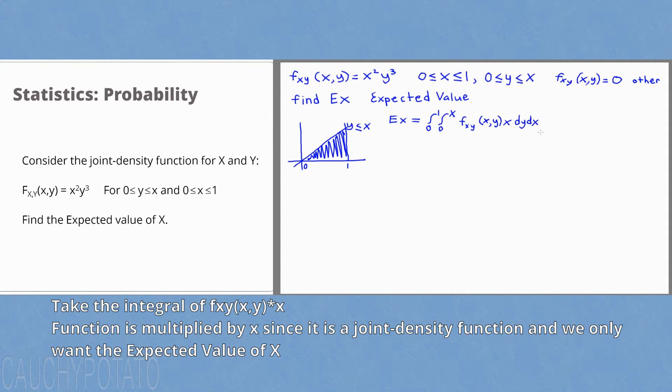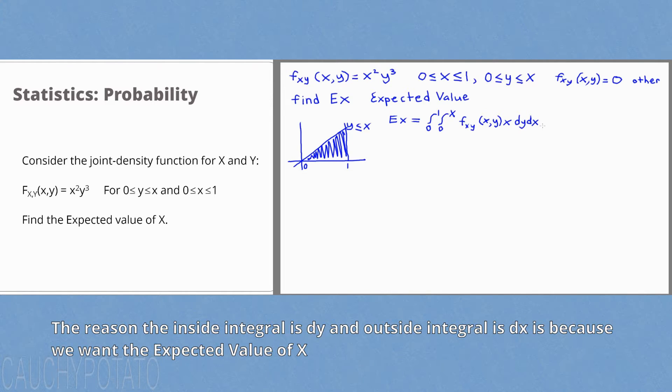The reason we multiply the function by x is because we are looking for the expected value of x. If we were looking for the expected value of y, we would multiply the function with y. Because we are looking for the expected value of x, the outside integral has to be dx.